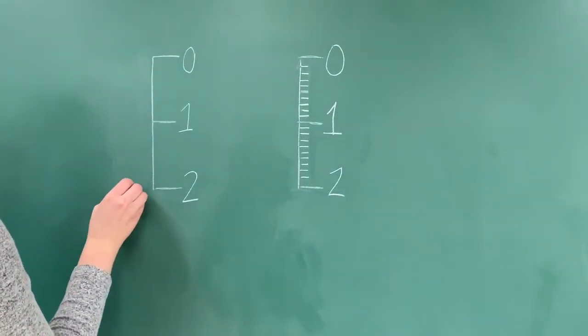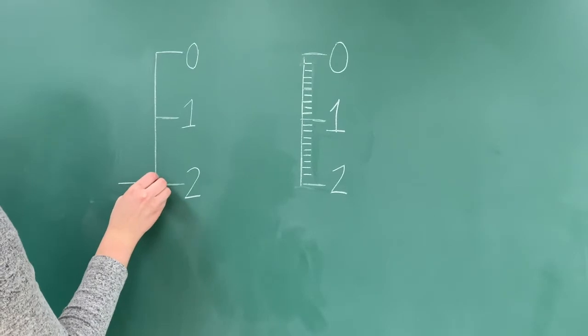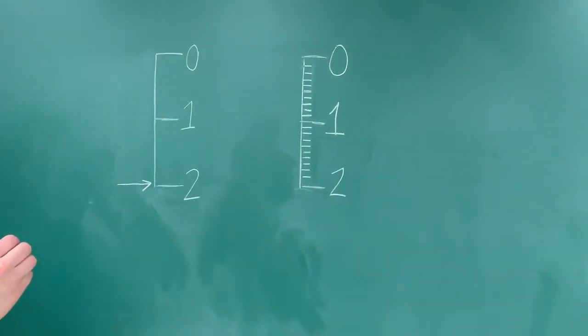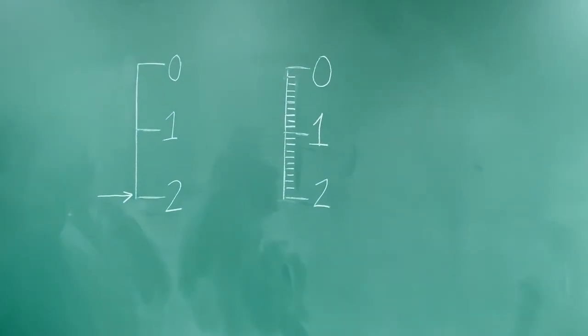If the arrow is very close to a scale marking but is not perfectly in line with it, like this arrow here, we can estimate the last digit to be 0.9. Therefore, this measurement is 1.9 centimeters.